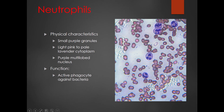Starting with neutrophils: they have really small purple granules — you may not even see the granules that well. The cytoplasm is kind of pink or light lavender. The really key feature is these multi-lobed nuclei. Whenever you see lots of lobes on a nucleus, you're almost always looking at a neutrophil. What neutrophils do is phagocytize bacteria — if you get a bacterial infection, neutrophils basically act like Pac-Man and eat the bacteria.